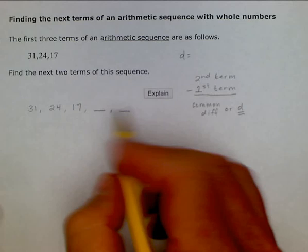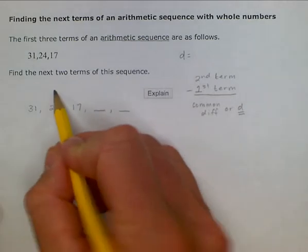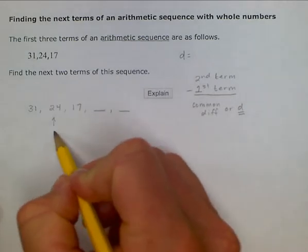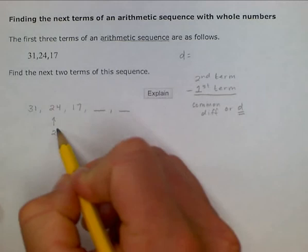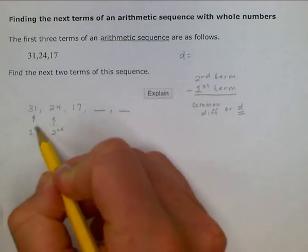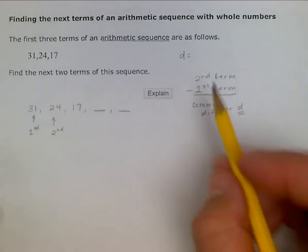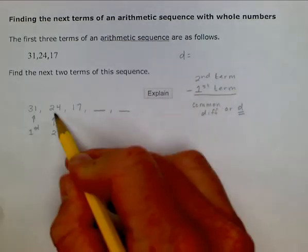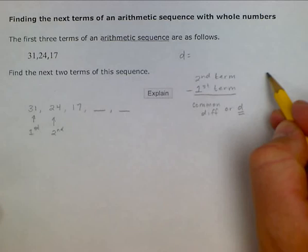So when we do that, we take our second term here, this is our second term, and this is the first term of the sequence. And we can put them in order here, so the 24 would go first...